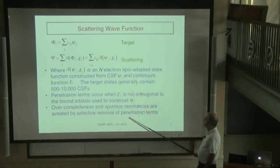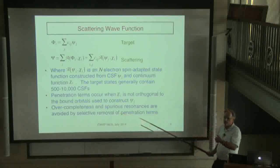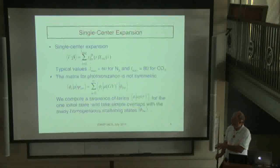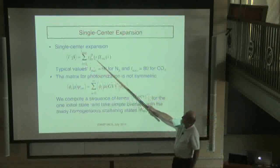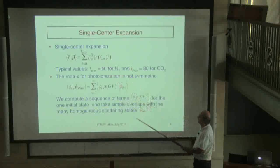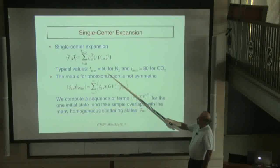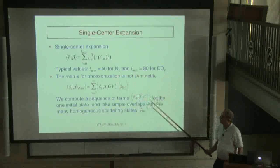The way we avoid those spurious resonances is by using reverse schemes for selectively removing the penetration terms which don't have open channels associated with them. For a single-center expansion, you take every three-dimensional function and write it as a product of a radial function times a spherical harmonic — or symmetry-adapted harmonic. The partial wave expansions for something like N2 you might want to go up to L=60, for CO2 maybe 80, and for bigger molecules 100 or 150. Since the arithmetic is quite regular, it becomes more of a computation problem than a basis set problem.